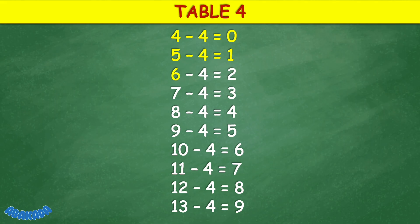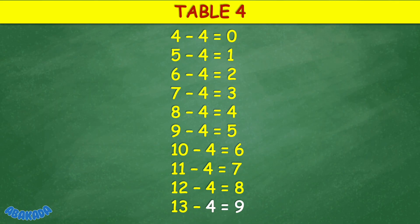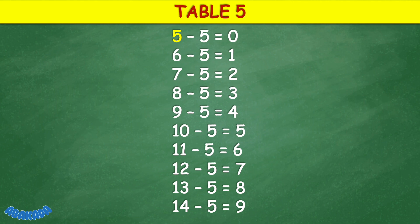Table 4: 4 minus 4 equals 0, 5 minus 4 equals 1, 6 minus 4 equals 2, 7 minus 4 equals 3, 8 minus 4 equals 4, 9 minus 4 equals 5, 10 minus 4 equals 6, 11 minus 4 equals 7, 12 minus 4 equals 8, 13 minus 4 equals 9.